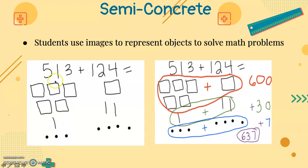Now for the problem, we have five squares for the 500 in 513, one line for the 10 in 513, and three dots for the 3 in 513.